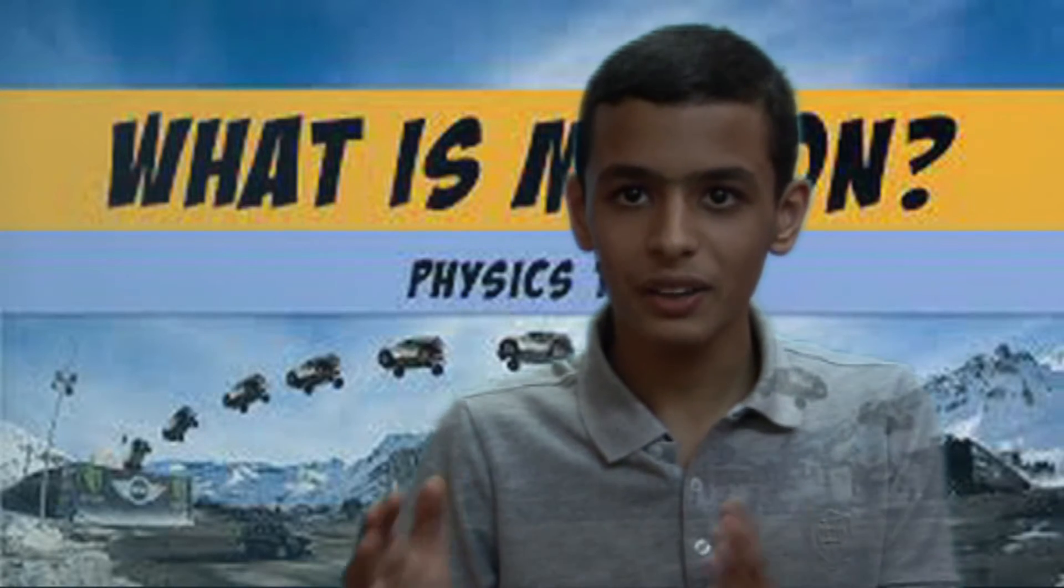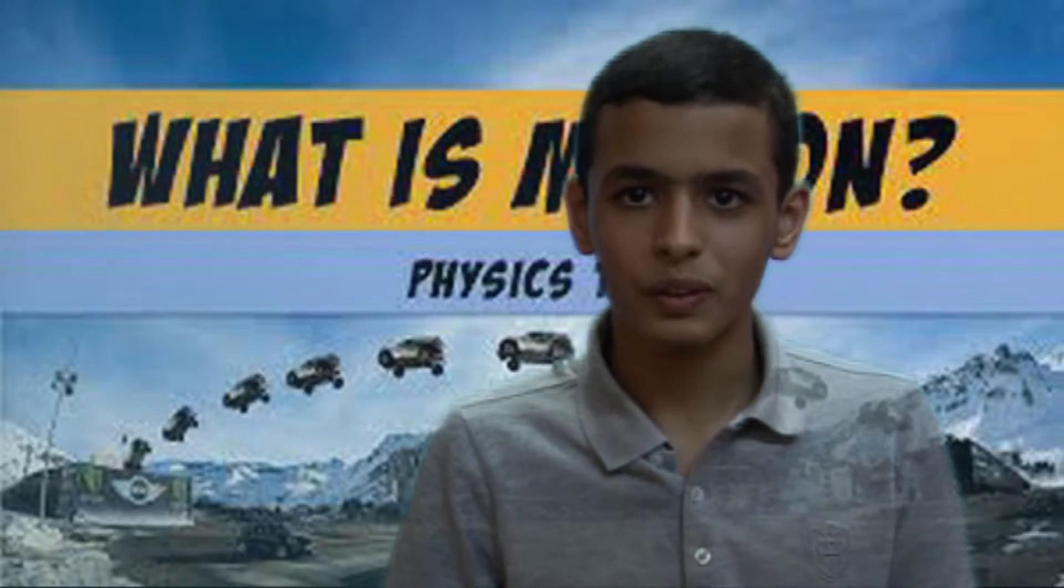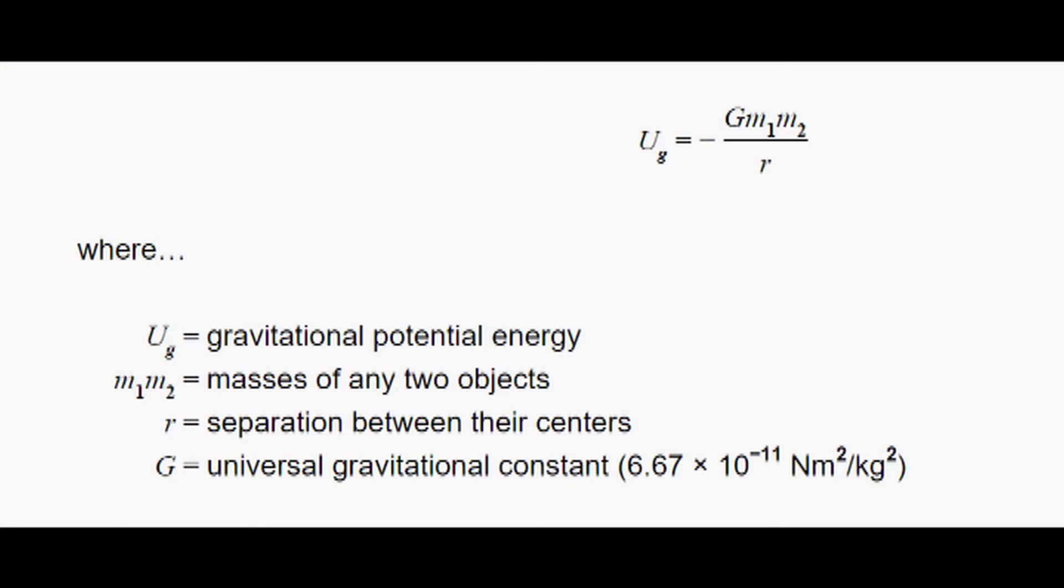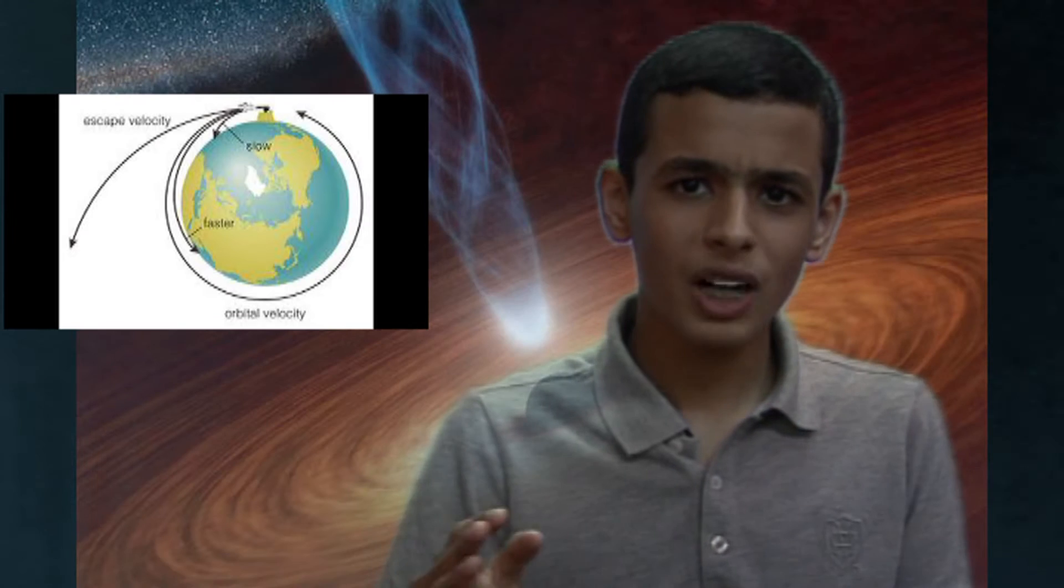Another one is called gravitational potential energy, which is due to its position in the gravitational field. It is equal to the negative of the gravitational constant times the mass of the object to be escaped, times the mass of the body, divided by the distance between the centers of mass.